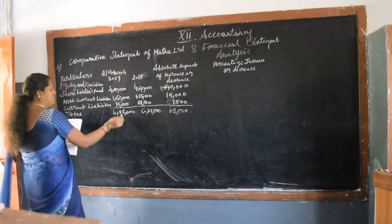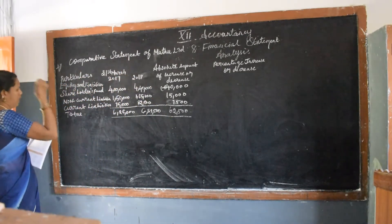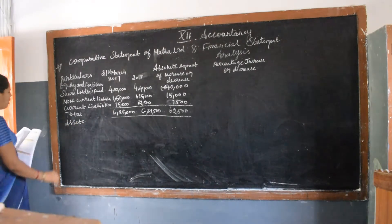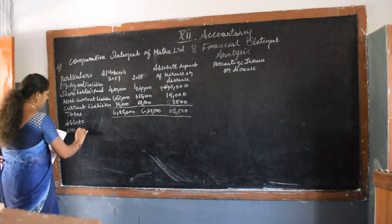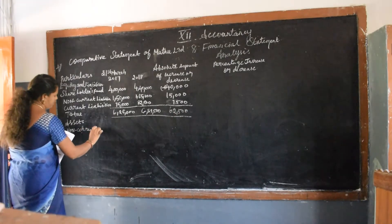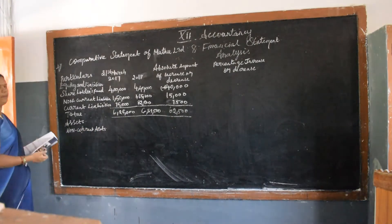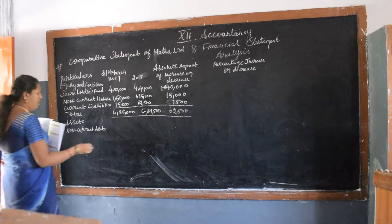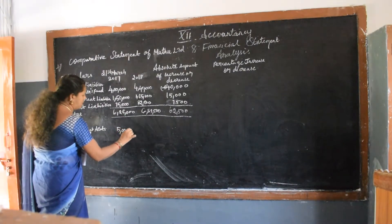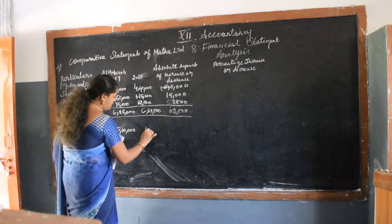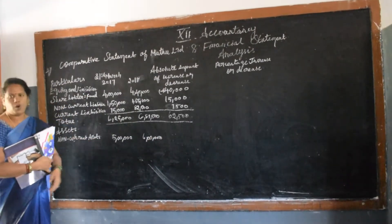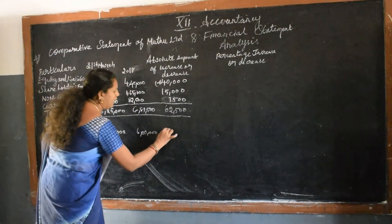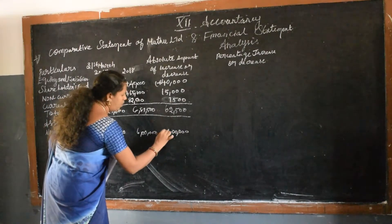62,500 is on the liability side. The liability section is over. Now we are moving on to the asset side. On the asset side, non-current assets: the first step is to write the corresponding value, which is 5 lakhs, and for 2018 it is 6 lakhs. The second step is to note the difference — whether it is an increase or decrease. It has increased in 2018, so the difference amount is 1 lakh — it is a plus.